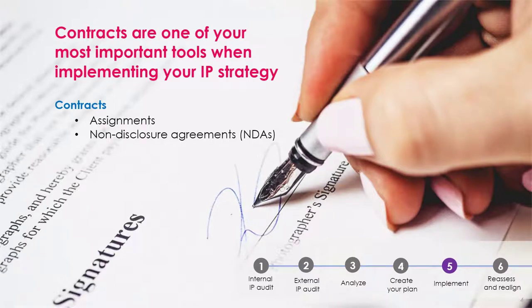An assignment agreement is a contract that transfers intellectual property rights from the creator to another entity, such as a company. If you're hiring contractors to develop or create software, movies, domain names, research, or do work in other technical areas, make sure you have them sign the agreements to assign the IP rights to the company. Simply put, this contract is there to ensure that the company owns the IP, not the employees.